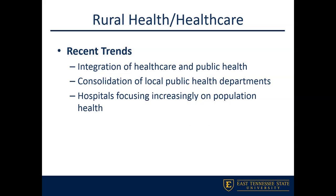Some recent trends in rural healthcare: we've seen a lot of integration between healthcare and public health, which has unfortunately led to consolidation of local public health departments simply because of funding. The ACA has mandated that health systems need to focus more on population health, so we've seen rural hospitals focusing more on population health outcomes. Soon, health systems' reimbursement will be tied not just to their patient population but to the health outcomes of the overall population, regardless of whether they're a patient of that system.